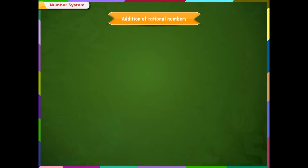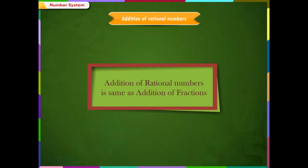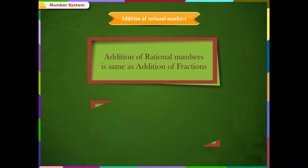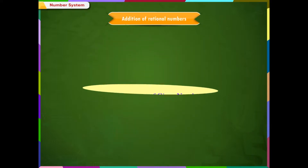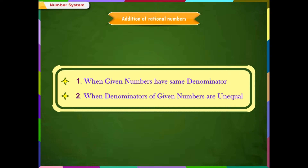Addition of Rational Numbers. We will learn the operation of addition of rational numbers. The addition of rational numbers is carried out in the same way as addition of fractions. If two rational numbers are to be added, we should first convert each of them into a rational number with a positive denominator. We divide the rational numbers into the following two categories.